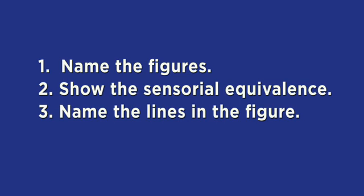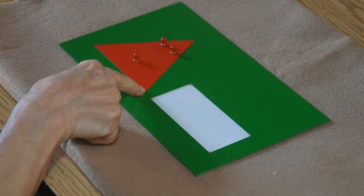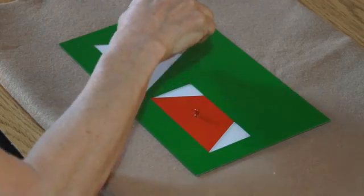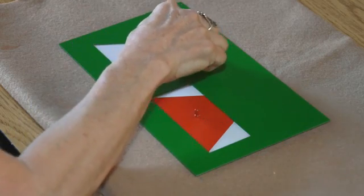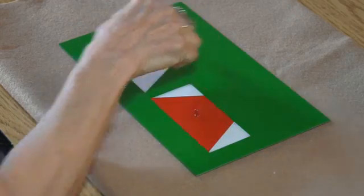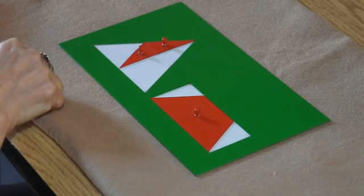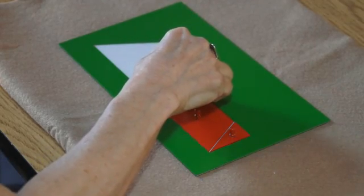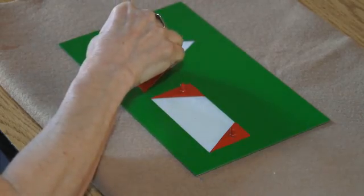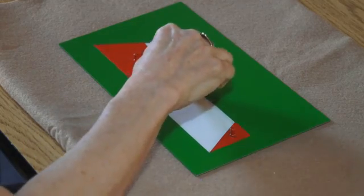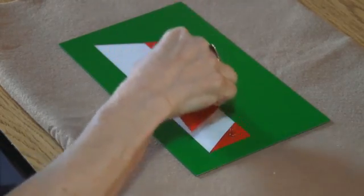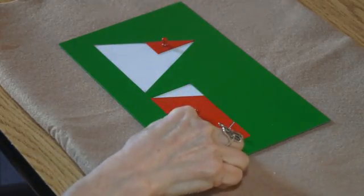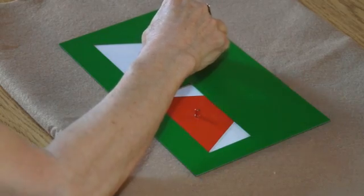Step three is naming the lines in the figures. This is the base of the triangle. This is the base of the rectangle. This is the height of the triangle. It's the perpendicular distance from the base to the opposite vertex. This is the height of the rectangle. The height of the triangle. Base of the rectangle. The height of the triangle. The height of the rectangle. That was step three.